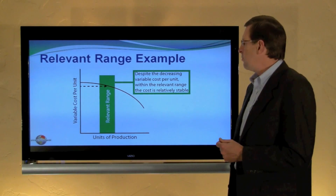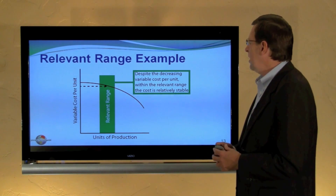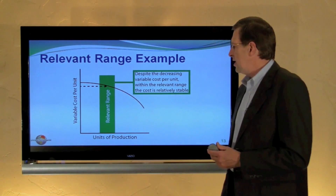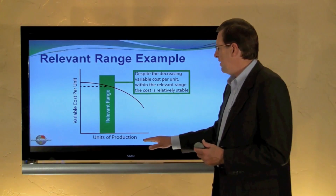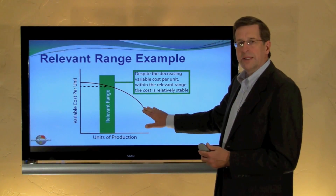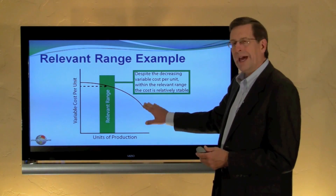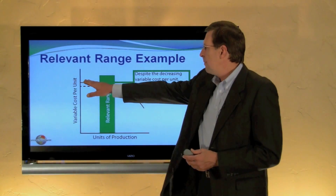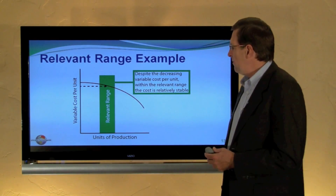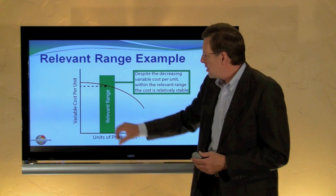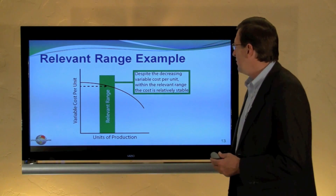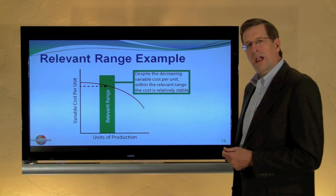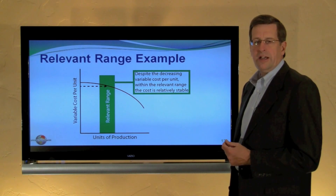Graphically, one can consider the relevant range in this fashion. The variable cost per unit declines as we increase production significantly. There are some very low price points at high volumes, but we're not going to produce at that level — nor at the higher price points at low volumes. We have to think about our pricing structure within our relevant range. So despite the decreasing variable cost per unit overall, within the relevant range the cost is stable.